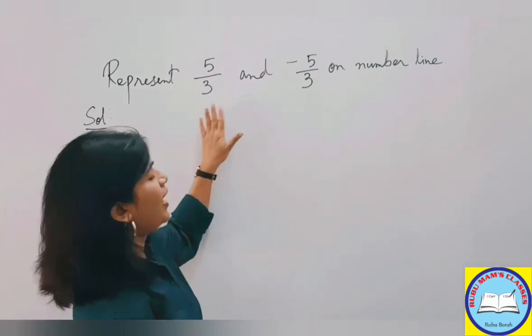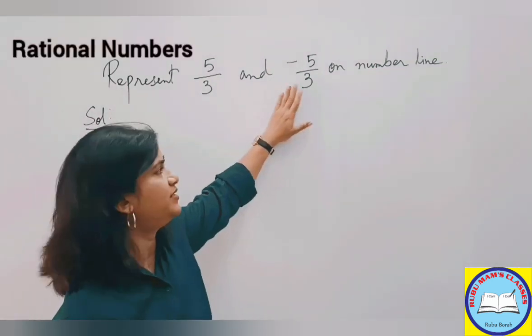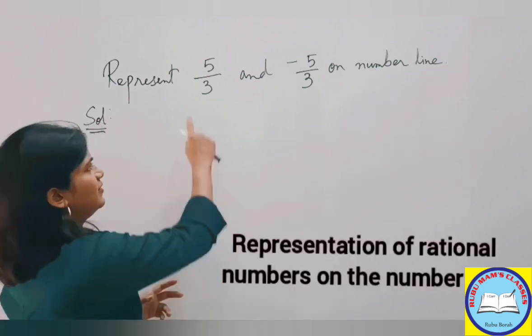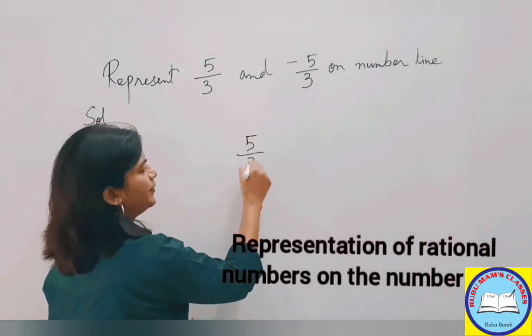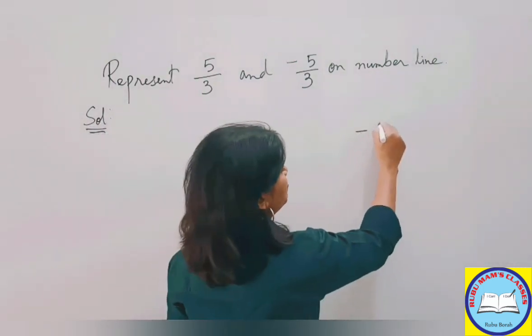Hello everyone! Welcome to my channel Ruboomans classes. Represent 5 upon 3 and minus 5 upon 3 on a number line. Let's see how to do that. See, one is 5 upon 3 and the other one is minus 5 upon 3.